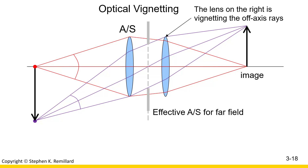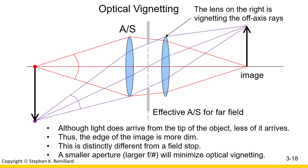So that's the effective ray bundles. Even though light is coming from the tip of the object, less of it is arriving at the image — fewer photons — it's going to be dimmer at the edge of the image. It might be easy to confuse this effective aperture stop for a field stop. A field stop limits the angle that light can come from, but it's the aperture stop that limits how much light is coming from that angle. So this is an effective aperture stop.